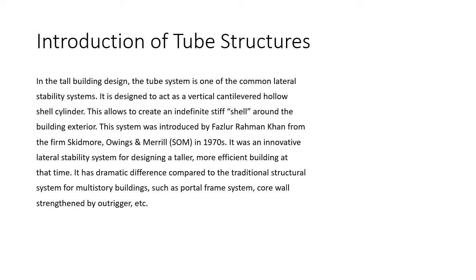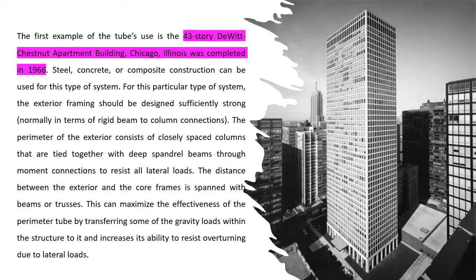It had a dramatic difference compared to traditional structural systems for multi-storied buildings, such as the portal frame system and core walls strengthened by outriggers. The first example of a tube used is the 43-story DeWitt Chestnut apartment building in Chicago, Illinois, completed in 1966.